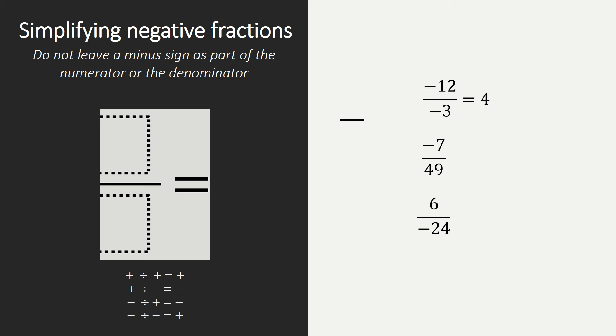How about minus 7 over 49? Or, if you say it differently, minus 7 divided by 49. First, check that negative divided by positive equals negative. So our answer needs to be negative.